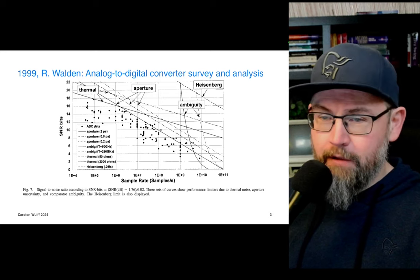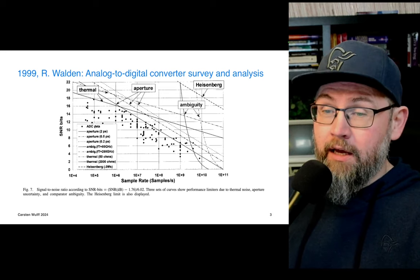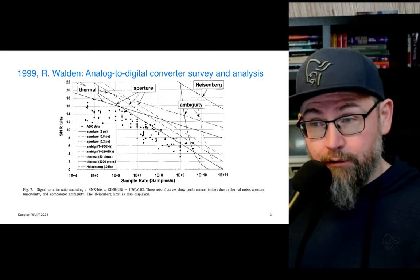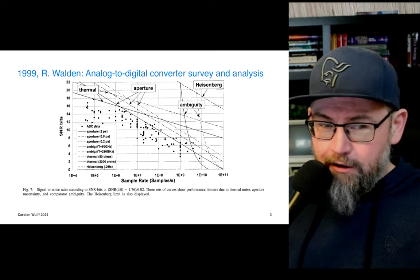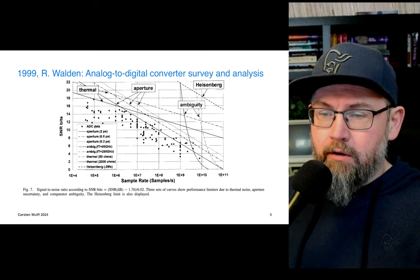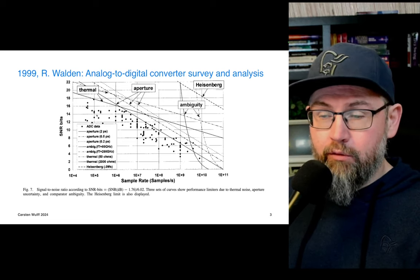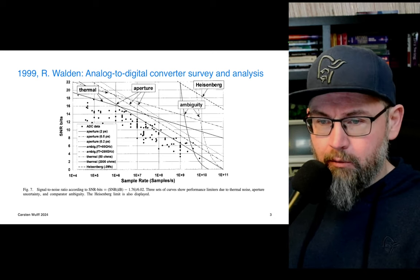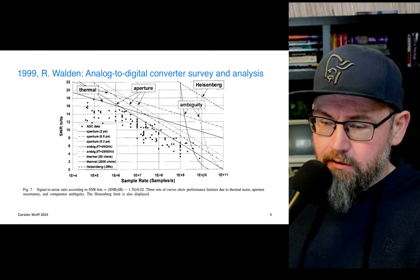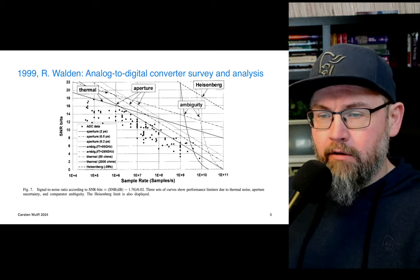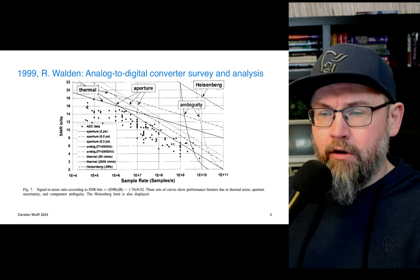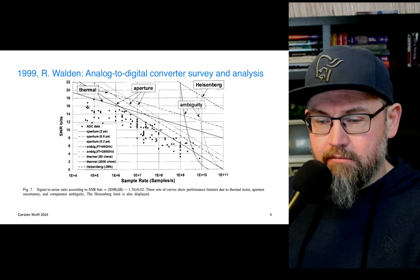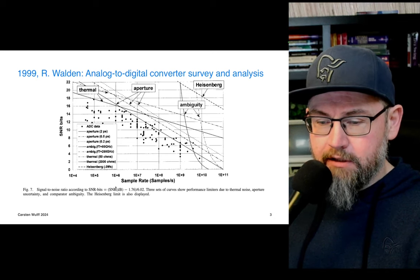Back in '99, there was a guy called Robert Walden who did a survey of the analog to digital converters at that time and made a nice plot. In that plot there are a few limits — one is thermal noise. We can see that as we increase the speed on the x-axis, thermal noise will place limits on how many effective bits we can get out. We can see the calculation of effective bits: signal-to-noise ratio minus 1.76 divided by 6.02.